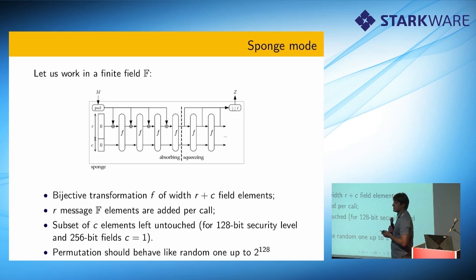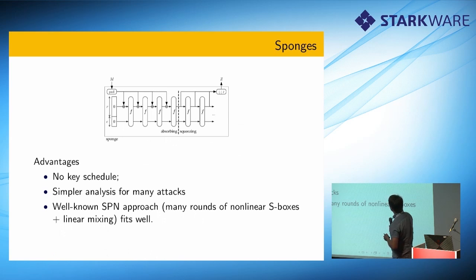Basically, we ruled out all the attacks on our permutations that require less than 2 to the 128 queries to the permutation, kind of distinguishers and all these sort of things. And the question is how to design the bijective transformation S so that it's really friendly to Starks or other designs.